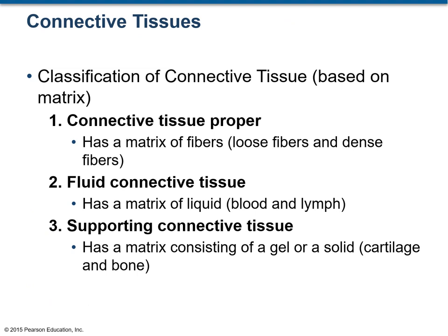Connective tissues are classified based on the nature of their ECM or matrix. There are three categories. The first is connective tissue proper, where the matrix is made up of fibers — loose or densely packed. The second is fluid connective tissue, where the ECM is fluid or liquid, including blood and lymph. The third is supporting connective tissue, where the ECM is gel-like or solid, for example cartilages and bones.